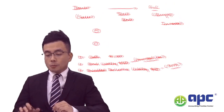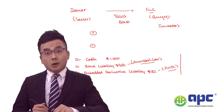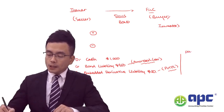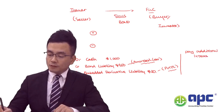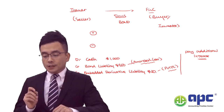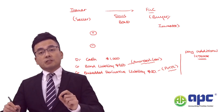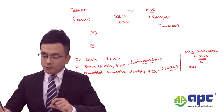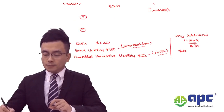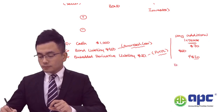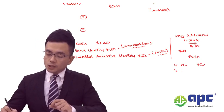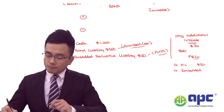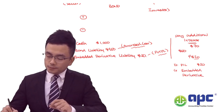So one year later, if the stock market performs quite well, the issuer would need to pay additional interest at some point in the future to the investor. If the original value for the embedded derivative liability was $50, but we now assess that fair value to be $70 — an increase of $20 — what we do is debit the P&L as a loss or expense of $20, and increase the embedded derivative liability by $20, from $50 to $70.